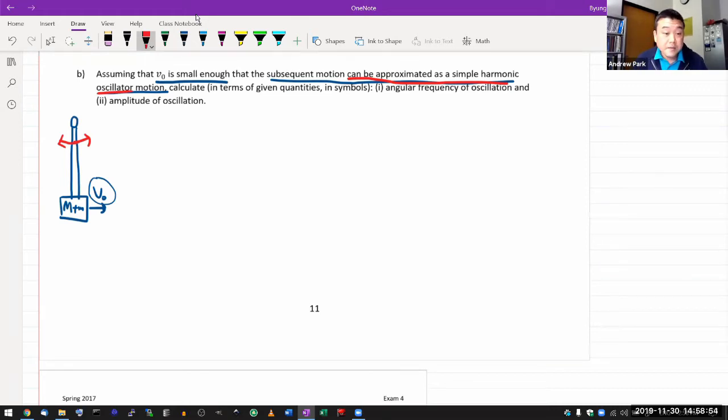If you remember the thing about pendulum being an example of something that's not necessarily a simple harmonic oscillator, it's also saying that this amplitude, so when it gets to the maximum displacement, that this angle is going to be small enough, that we can treat this as, we can use a small angle approximation, and treat this as simple harmonic oscillator. So it says calculate in terms of given quantities in symbols, angular frequency of oscillation, and amplitude of oscillation.